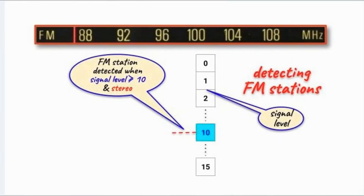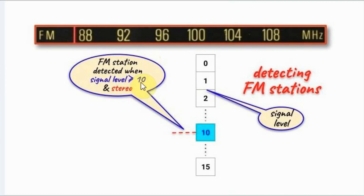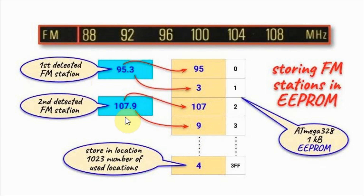This diagram shows how an FM station is detected based on the signal level and the stereo bit. The signal level has 16 levels from 0 to 15. We set a threshold at a certain level, let's say 10. If the current frequency's signal level is greater than or equal to 10 and the stereo bit is set, then we have detected an FM station. This diagram also shows how detected FM stations within the 88 to 108 MHz band are stored within the microcontroller's EEPROM.